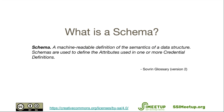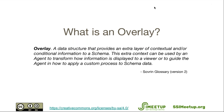On your screen here you'll see the definition of a schema according to the Sovereign glossary. A schema is a machine-readable definition of the semantics of a data structure. Schemas are used to define the attributes used in one or more credential definitions. An overlay is a data structure that provides an extra layer of contextual and/or conditional information to a schema.